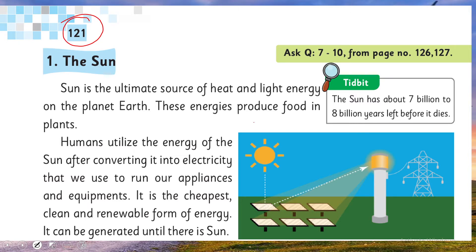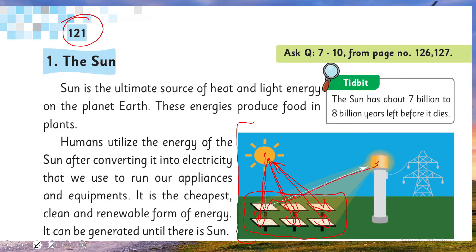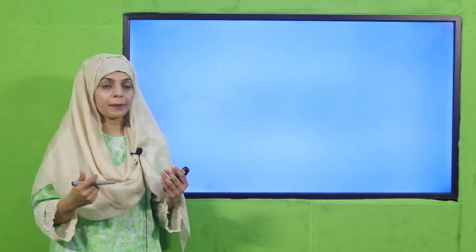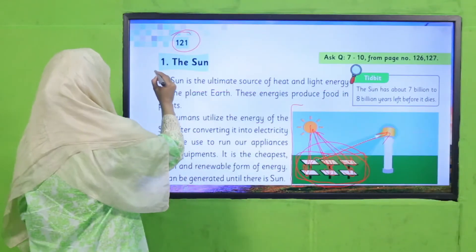Now quickly open page number 121. Here you can see a picture of solar panels. What happens when the heat and light energy of the sun falls on these panels? They trap the energy and convert it into electricity. And this is how the energy of the sun is used to generate electricity.